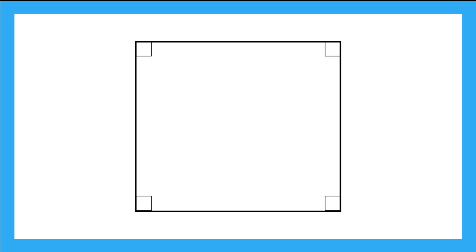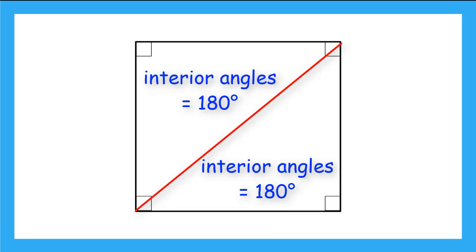In this square, we can also draw a diagonal line from one vertex to another vertex that's not next to it. Now we have two triangles. Remember, each triangle has a sum of interior angles of 180 degrees. So if we add the interior angles for both triangles together, what do we get? 180 plus 180, which is equal to 360. And we expect that because 360 is the sum of the interior angles of a quadrilateral.